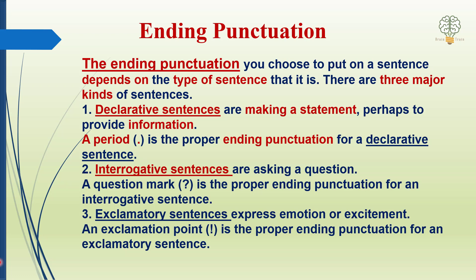The next one is interrogative sentences. Interrogative sentences are asking a question — yani woh sentences jismein kuch puchha gaya hai, sawal puchha gaya hai. Interrogative sentences are question sentences. And a question mark — iske liye jo hai woh use hota hai. This is the question mark and this is the period. Question mark jab aapko koi sawal puchh‍na ho, that's the proper ending punctuation for interrogative sentences.